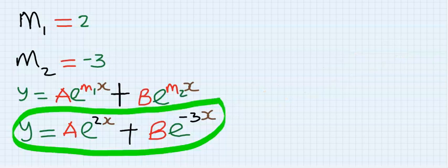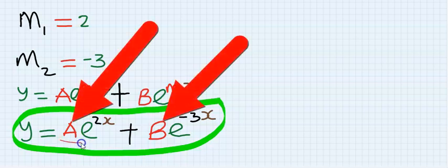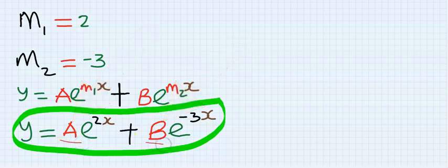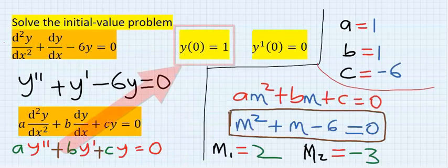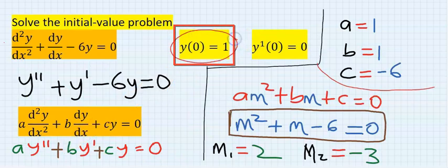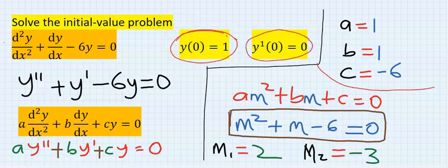However, I have a boundary condition. I will use the initial condition to replace for my a and for my b, which leads us to step number six. Step number six: Consider the initial condition. The first initial condition, and this is the second initial condition.